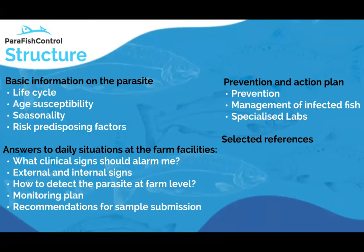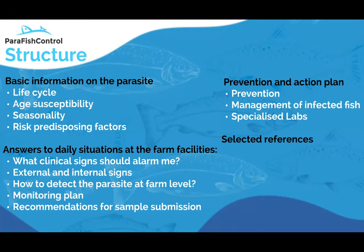The guide structure provides basic information on the parasite, including the life cycle, age susceptibility, seasonality, risk and predisposing factors, daily answers to on-farm situations, clinical symptoms, external and internal signs, how to detect the parasite, monitoring plans, sample submission recommendations, prevention guidelines, farm management of the parasite, a list of specialized labs to contact, and selected applied references.